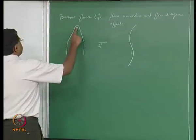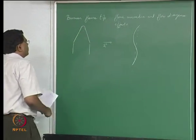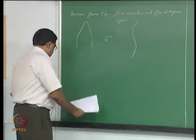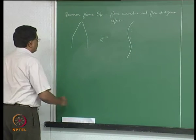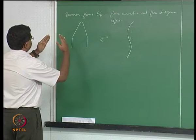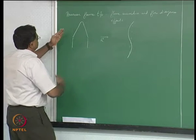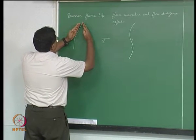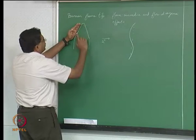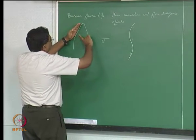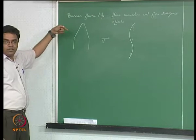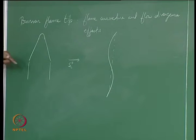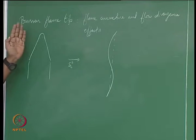We were talking about what happens to the Bunsen burner at the tip. Flame stabilization, largely speaking, is about the shoulder of the flame, where the normal component of the flow velocity tries to balance the flame speed that is normal to the flame itself, and therefore the flame shapes itself correspondingly.